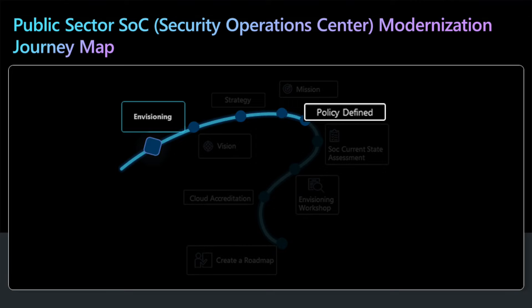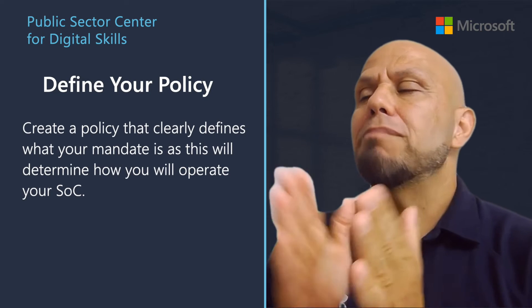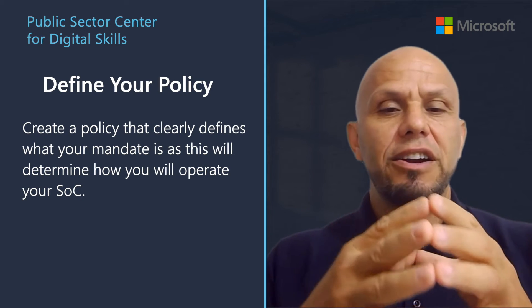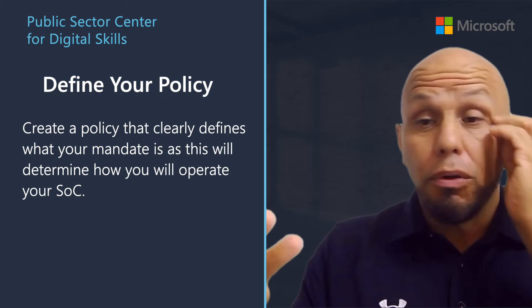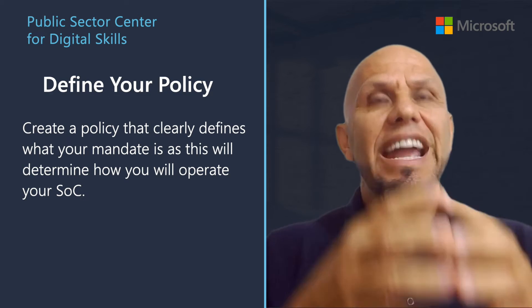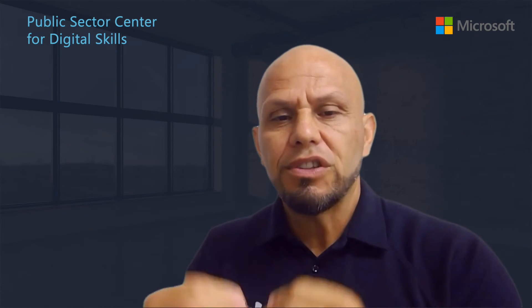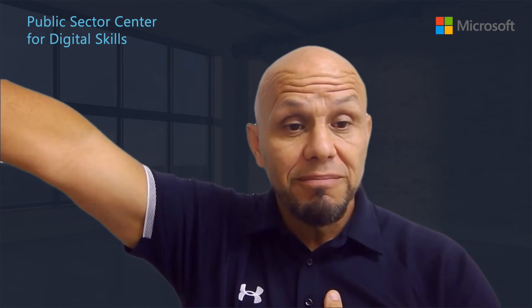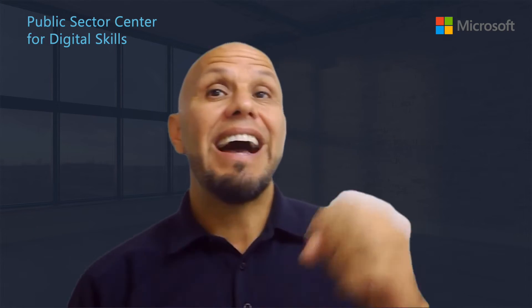When we talk about policy, it's important to create a policy that clearly defines what the mandate is for the agency SOC. For example, the agency SOC handles the most averted security incidents and escalates more complex, higher-severity incidents to a national cybersecurity center. All of this needs to be defined when outlining your policy, as it will determine how you operate that SOC.